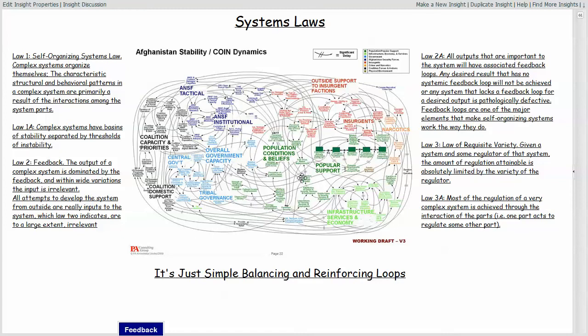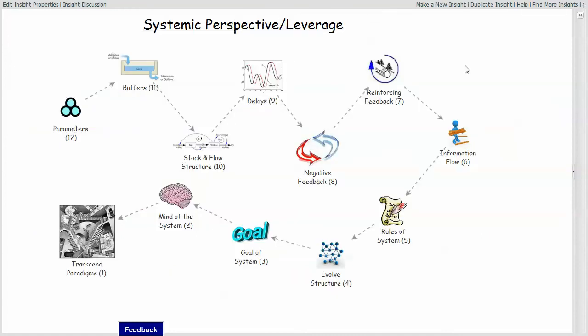So in terms of understanding those laws and trying to figure out where one goes about modifying the structure of the system to affect the desired behavior, the best thing that I have found to date is a paper by Donella Meadows called Leverage Points. And in that paper, she identifies 12 different types of alterations that one can make to a system.